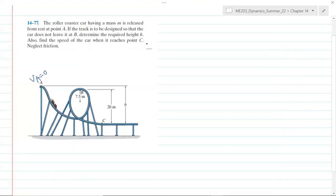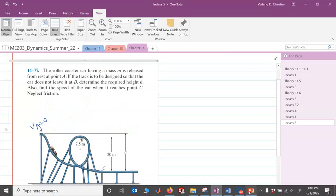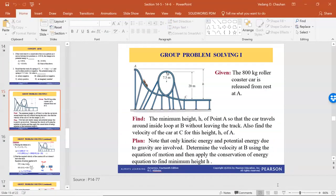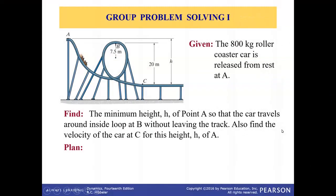Also find the speed of the car when it reaches point C. Neglect the friction. So this is actually the solved problem from the slide, so I'll walk you through the solution. This is 800 kilogram. By the way, in the problem we were not given the mass, but here the mass is given. We can solve this problem even without knowing the value of m.